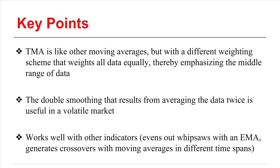The conservativeness of this read comes not only from the emphasis on the middle range of data, but from the fact that two averages occur. First, simple moving averages are collected and these are themselves averaged. So in a volatile market, the indicator is not going to indicate a trend until the data overwhelmingly demonstrates a positive direction.